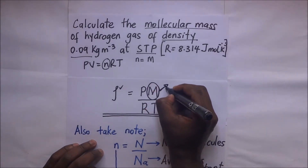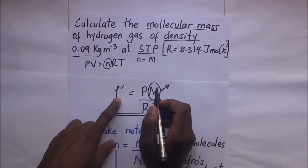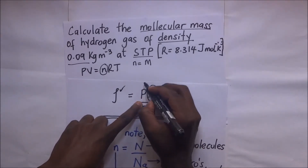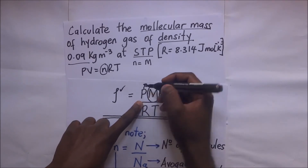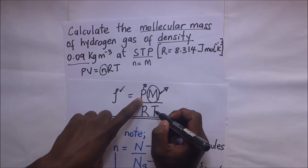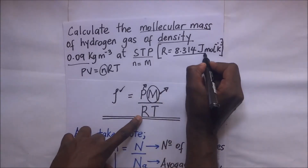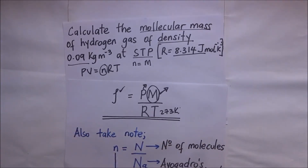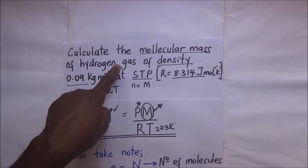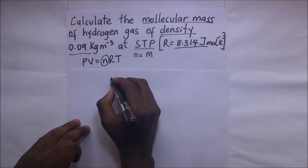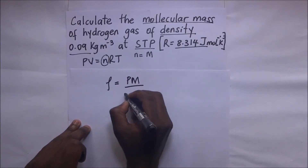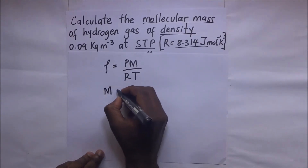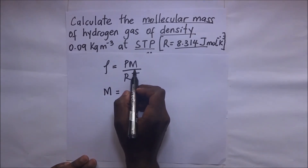We want to find M, the molecular mass — it's just making M the subject of the formula. The question gives us the density, the standard pressure of 760 mmHg or 1.0 × 10⁵ N/m², the value of R provided in the question, and the absolute temperature of 273 K at STP. Starting from ρ = PM / RT, we rearrange to get M = ρRT / P.